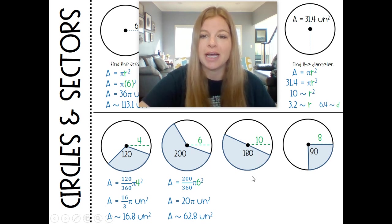Next one: 180 is kind of fun because 180 is just half of 360. So I'm really just doing 10 squared is 100 multiplied by a half which is 50. So it's 50 pi or 157.1.